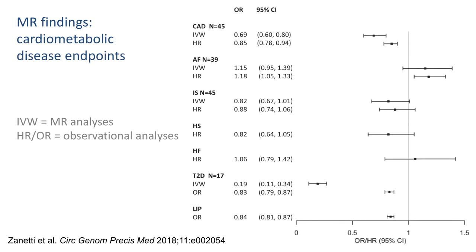Here is a similar plot for binary endpoints, specifically coronary artery disease, atrial fibrillation, ischemic stroke, and type 2 diabetes. There is evidence of significant causal effects on coronary artery disease and diabetes, and these effects were negative, meaning higher birth weight implied lower risk.